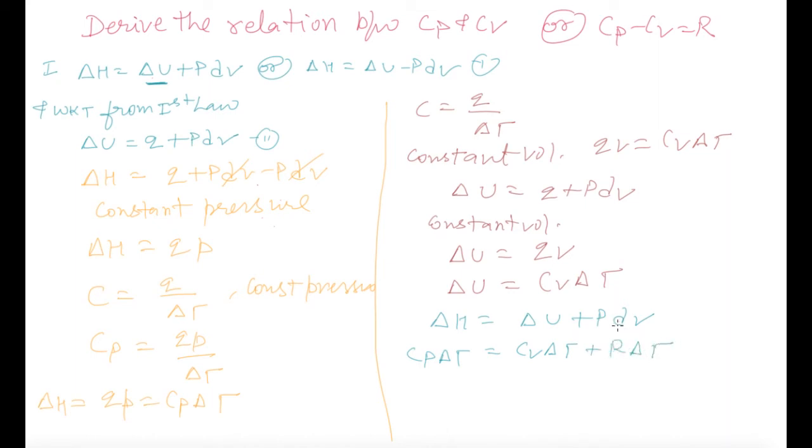We know that from enthalpy equation which we have done in the last class. Now delta T, delta T and delta T cancel. Cp is this side and Cv is coming from that side. Cp minus Cv is equal to R.